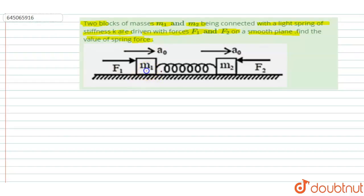In this question, given two blocks M1 and M2, the acceleration of the whole system in this direction is A0, and F1 and F2 are acting on M1 and M2 respectively. The spring constant is K. When force F1 is acting in this direction, the spring force is acting in the opposite direction with value Kx, where X is the extension in the spring. Similarly, if F2 is acting on block M2, the spring force acts in the opposite direction with value Kx.